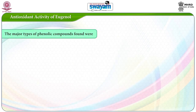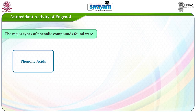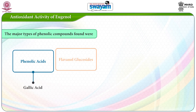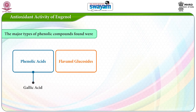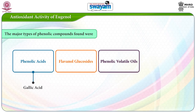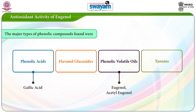Clove buds was the spice presenting higher antioxidant activity and polyphenol content. The major types of phenolic compounds found were phenolic acids such as gallic acid, flavanol glucosides, phenolic volatile oils such as eugenol, acetyl eugenol, and tannins.